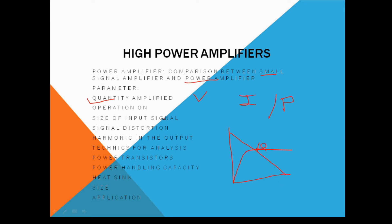The third parameter is the size of the input signal. For the small signal amplifier, the size of the input signal is a low voltage, small signal. But in the case of the power amplifier, the size of the input signal is very high. Regarding signal distortion, in the case of the power amplifier, since the operation may be in the cutoff region, the output signal gets distorted. Regarding harmonics in the output, in the case of the voltage amplifier no harmonics are present, but in the power amplifier harmonics are present in the output.